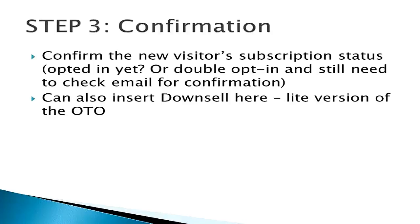Step 3: Confirm the new visitor's subscription status — have they opted in yet, or is it double opt-in and they still need to check their email for confirmation? You can also insert a downsell here, a little version of the OTO. Last but not least is Step 3 of 3: the confirmation page. Whether the new visitor passes up your one-time offer, he arrives at the confirmation page. You inform your new visitor that he has already been subscribed if your autoresponder uses single opt-in, or that he still has to check his email if you are using a double opt-in autoresponder. This page has high virtual real estate value, so you can insert a downsell — the light version of your OTO, priced lower with some components removed to allow affordable purchase.